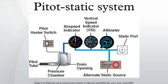The airspeed indicator is connected to both the pitot and static pressure sources. The difference between the pitot pressure and the static pressure is called dynamic pressure. The greater the dynamic pressure, the higher the airspeed reported. A traditional mechanical airspeed indicator contains a pressure diaphragm connected to the pitot tube. The case around the diaphragm is airtight and is vented to the static port. The higher the speed, the higher the ram pressure, the more pressure exerted on the diaphragm, and the larger the needle movement through the mechanical linkage.